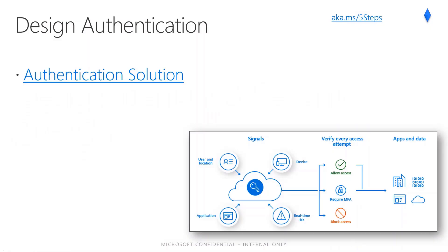Authentication is the process of proving who you say you are. The Microsoft Identity Platform implements the OpenID Connect protocol for handling authentication. Choosing the correct authentication method is the first concern when moving apps to the cloud. To choose an authentication method, you need to consider the time, existing infrastructure, complexity, and cost of implementing your choice.